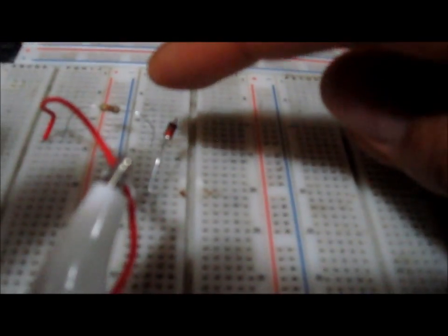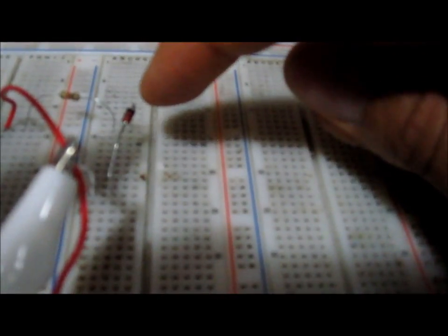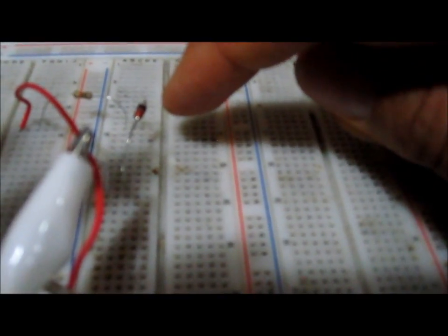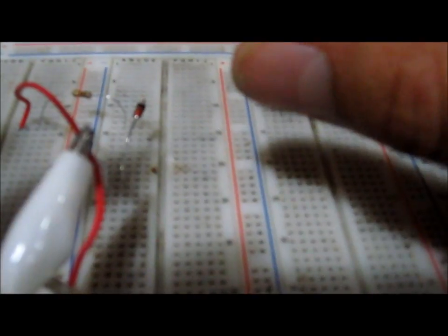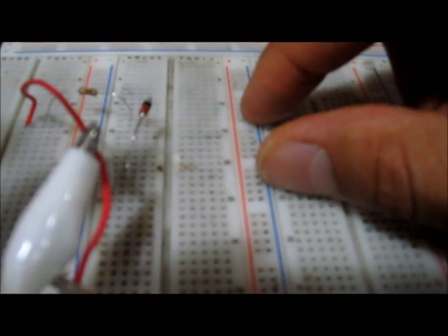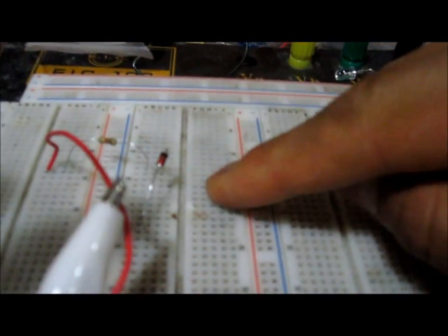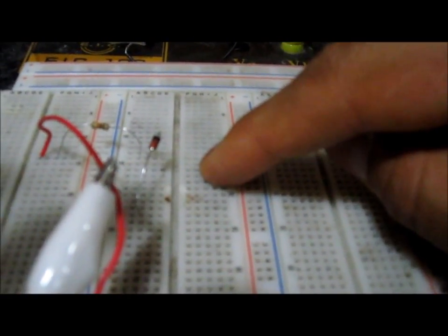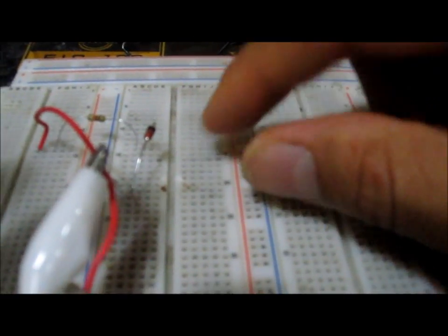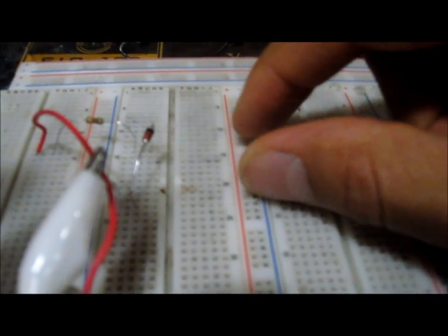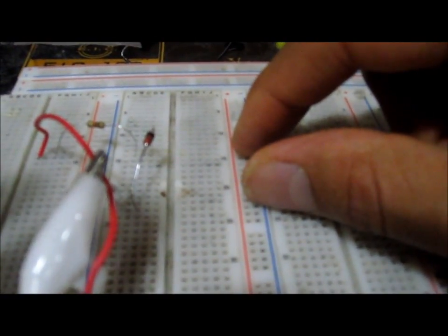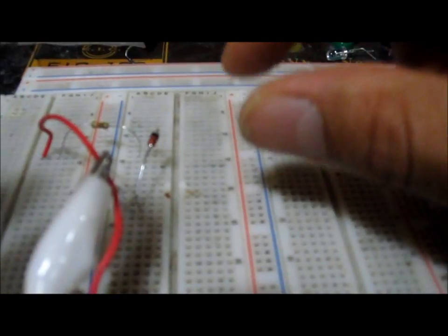The reason we have a resistor in this circuit is that a Zener diode can only hold a certain amount of voltage across its terminals. This Zener diode specifically is a 1N4733 Zener diode, which means it has a breakdown voltage of 5.1 volts approximately.